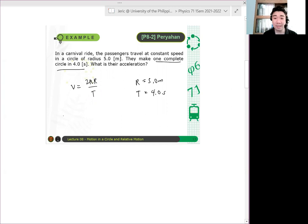So given here the radius is 5 meters and the period is 4.0 seconds, both are given. Now, this means that the centripetal acceleration is simply v² over r, which means it is 1 over r times 2πr over T quantity squared, which is just equal to 4π²r over T². Right?